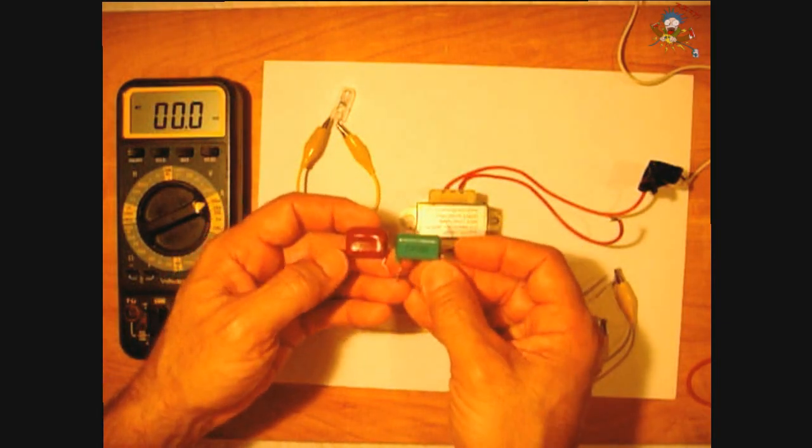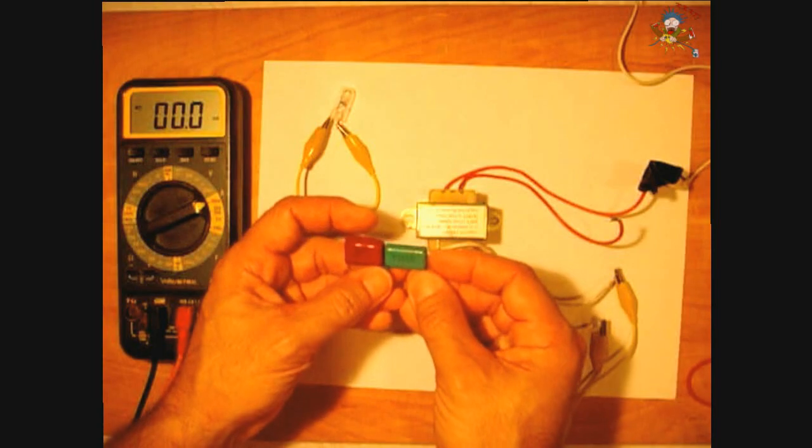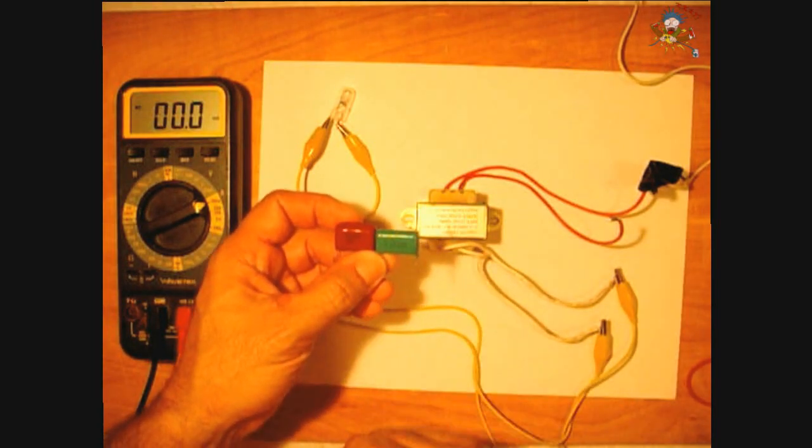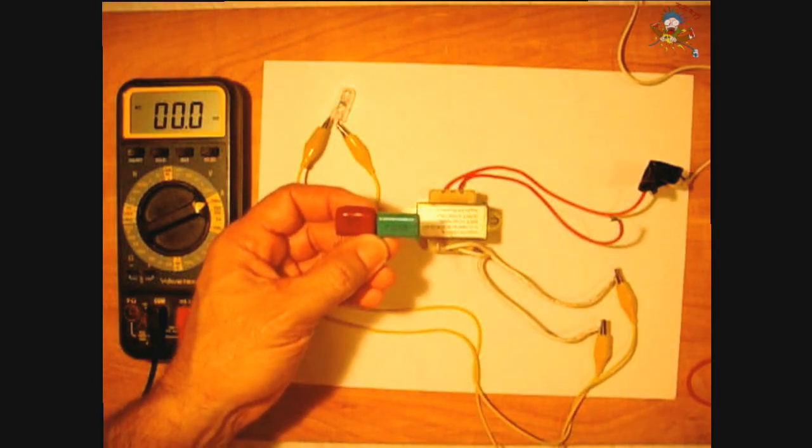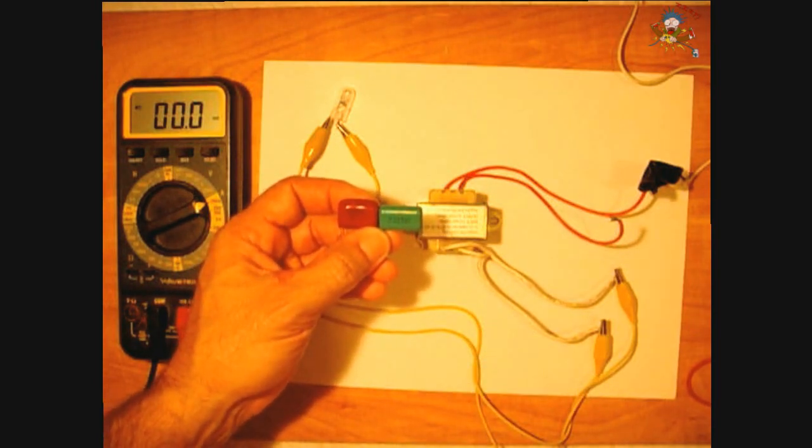So what I'm going to do is I'm going to place both of these in series. So now they can handle 500 volts and the rating of 0.56 will be cut in half. So it'll be around 0.28 microfarads.